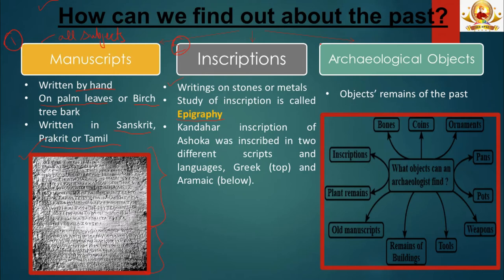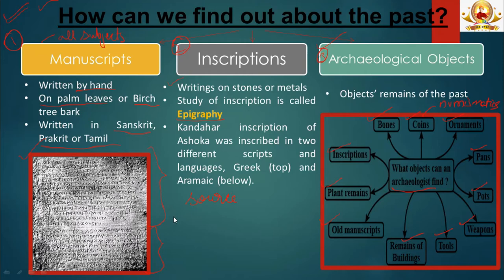We can also find out about the past with the help of archaeological objects — things made and used in the past. People who study them are called archaeologists. They study remains of buildings, and excavate to find tools, weapons, pots, pans, ornaments and coins. The study of coins is known as numismatics. They also look for bones of animals, birds and fish to find what people ate, and study plant remains and old manuscripts. Information from manuscripts, inscriptions and archaeology is collectively known as a source.